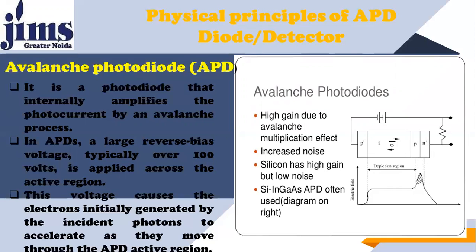One difference between APD and previous photodiodes is that APD requires more reverse bias voltage. In APDs, a large reverse bias voltage — typically over 100 volts — is applied across the active region. This voltage causes the electrons initially generated by the incident photon to accelerate as they move through the APD active region.